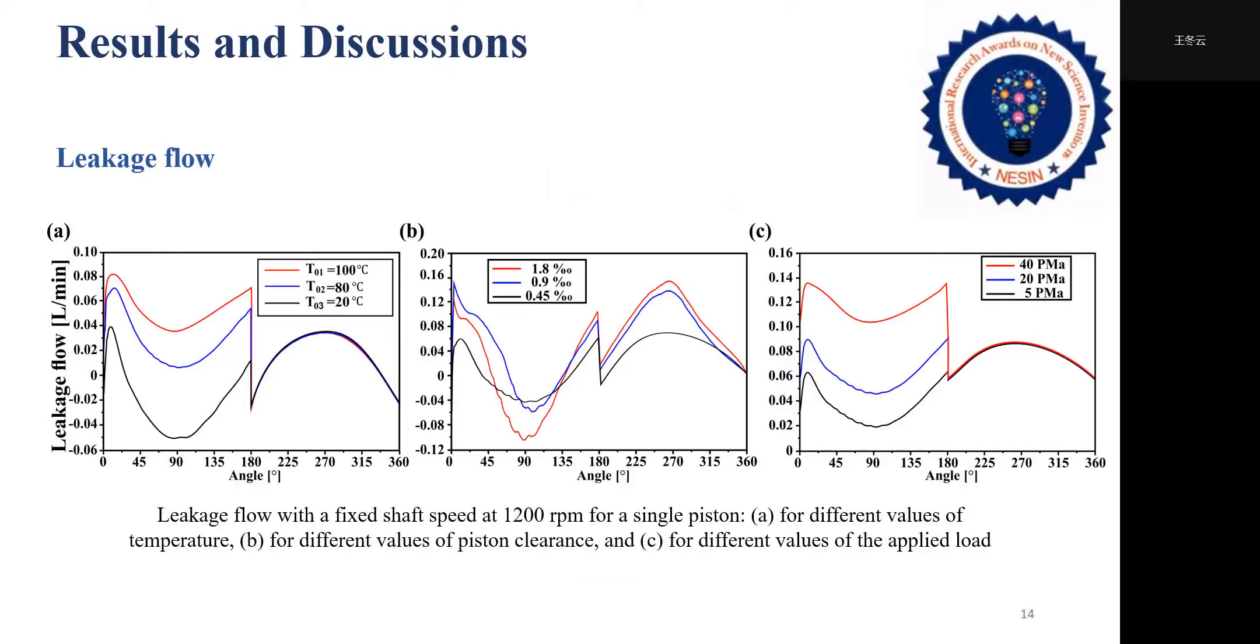The leakage flow varies proportional with pressure in the suction zone from 0 to 180 degrees, can reach the difference of about 0.7 liter per minute in a maximum volume while it remains almost the same in the discharge zone.